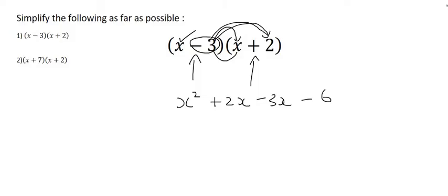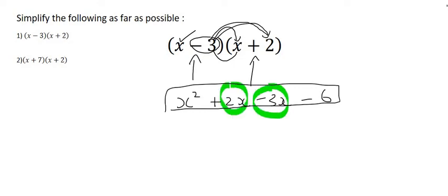What we now do is we scan across these four terms, and we see if there are any like terms. Well, yes, there are. 2x and 3x are like terms, and so positive 2x minus 3x is, well, what's 2 minus 3?